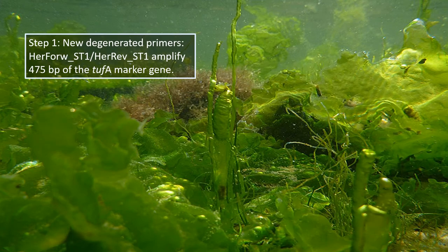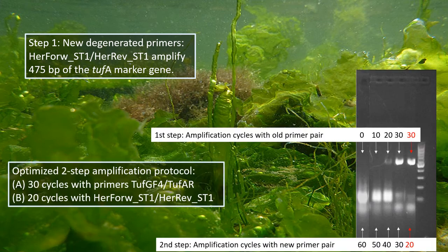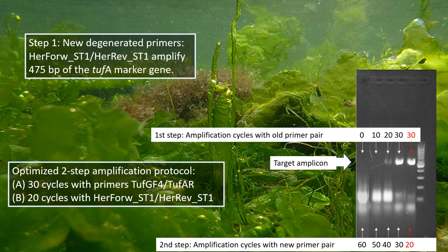We have recently developed a methodology for meta-barcoding of Ulva. In the first step, we developed new degenerate primers that amplify a shorter section of the tufA marker gene than the traditional primers. And in the second step, we optimized the amplification protocol. Our target amplicon, with a length of 550 base pairs including the primer sequences, was best obtained when we used a two-step amplification protocol.